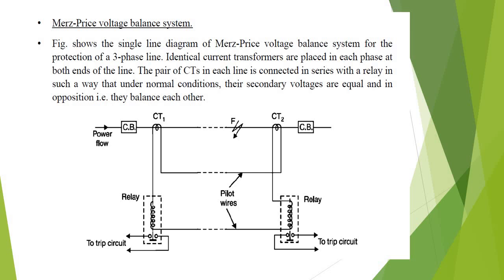Suppose there is a fault occurring at point F1. This will cause a greater current to flow through CT1 than CT2. Consequently, their secondary voltages become unequal and a circulating current flows through the pilot wires and the relay. The circuit breakers at both ends of the line will then trip and the faulty line will be isolated.